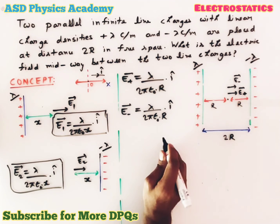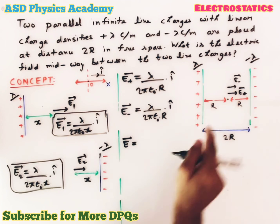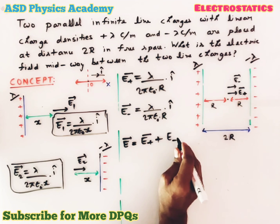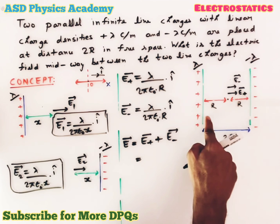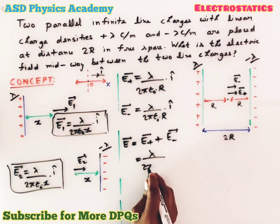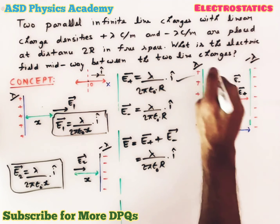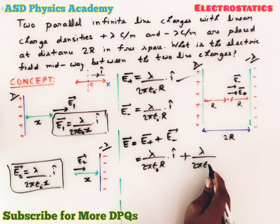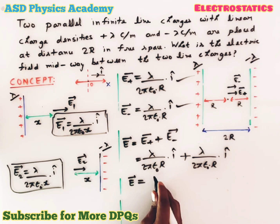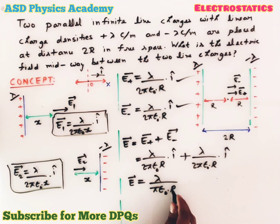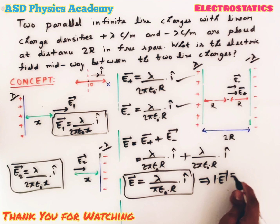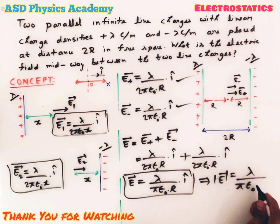The electric field at the midpoint will be the vector sum of these two: E-plus plus E-minus, where E-plus is due to the positive line charge and E-minus is due to the negative line charge. Putting in the values: lambda by 2 pi epsilon-naught r times i-cap, plus lambda by 2 pi epsilon-naught r times i-cap. The net electric field at the midpoint is lambda by pi epsilon-naught r times i-cap in vector form, and its magnitude is lambda by pi epsilon-naught r.